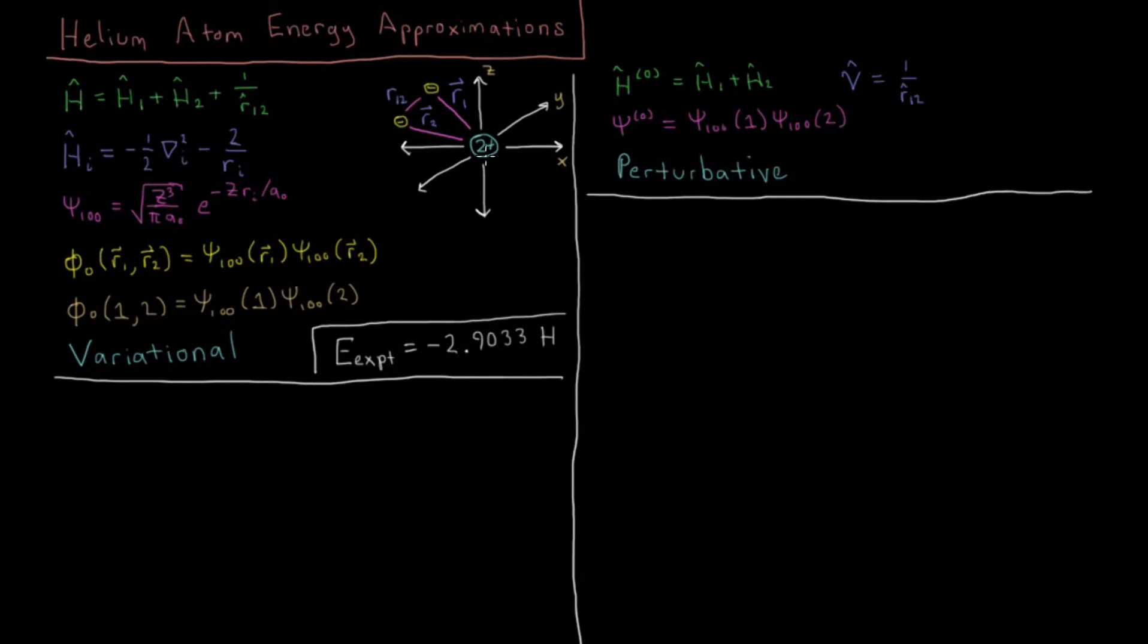So we've got our helium atom here, we've got the nucleus of two protons fixed at the origin, so it has no kinetic energy. We've got two electrons, one at R1, so that represents three spatial coordinates for electron 1, one at R2 representing the three spatial coordinates for electron 2, and they are some distance R12 apart.